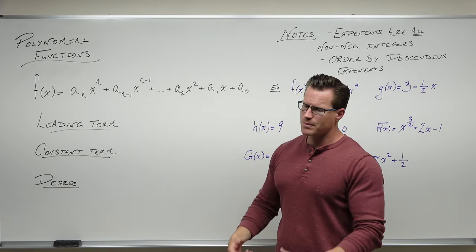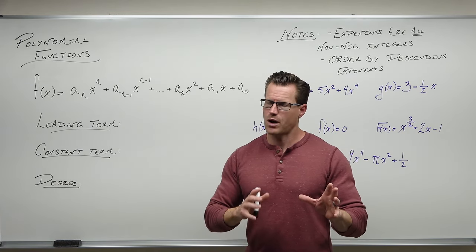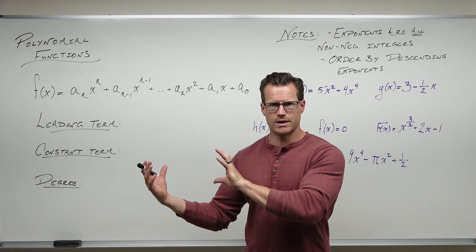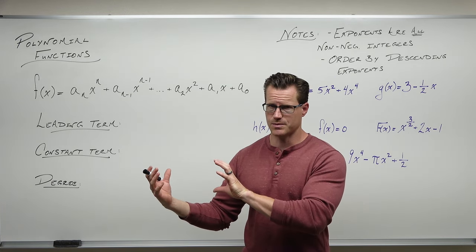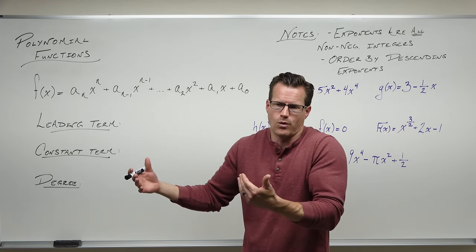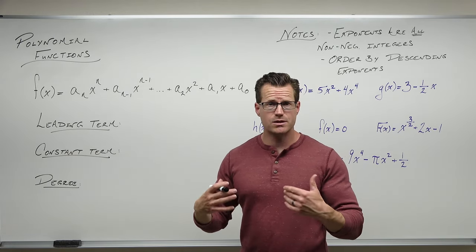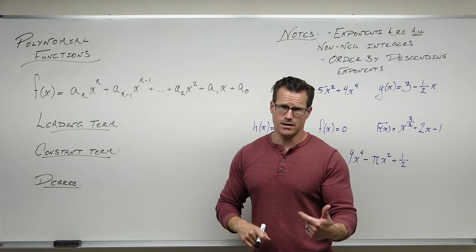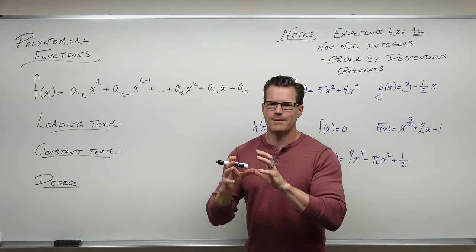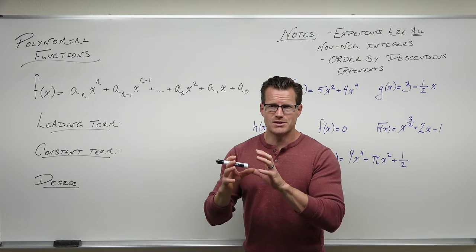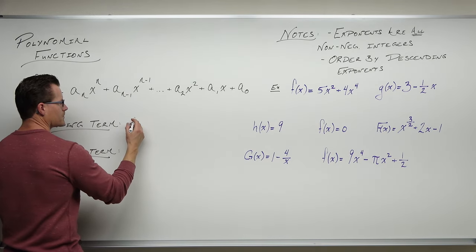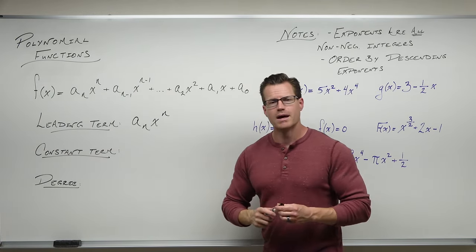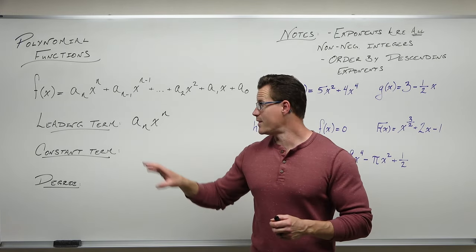Now, a couple of key words. The first one is the leading term. If you have your polynomial in order, your leading term is going to be the term with the largest exponent. It should be your first term if you've done it in order. The leading term is a_n times x to the n — it's really the only coefficient we don't want to be zero, because you should start somewhere. Your leading term is the term with the largest power and it should be written first.